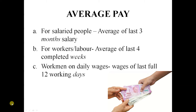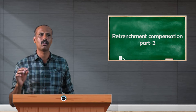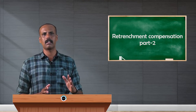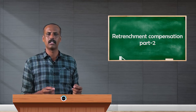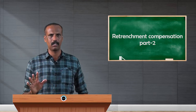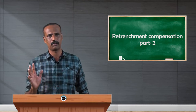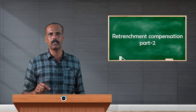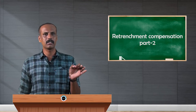For the second category — workers or laborers who receive salary on a weekly basis — the average pay is equal to the average of the last 4 completed weeks. For example, if an employee is retrenched at the end of January, and he received salary each week: first week 2,000 rupees, second week 3,000 rupees, third week 3,000 rupees, fourth week 4,000 rupees — we take the aggregate of all 4 weeks divided by 4 to get the average weekly salary. Then we convert it to a 1-day salary and multiply by 50. That is the compensation as per the Industrial Disputes Act 1947 for labour and workers.